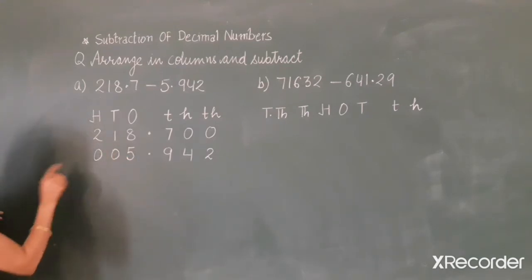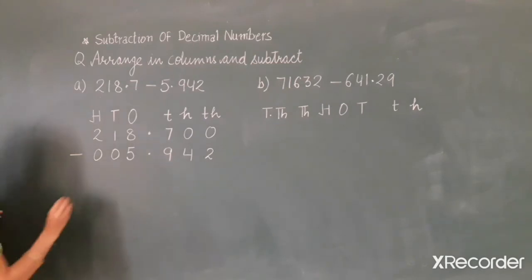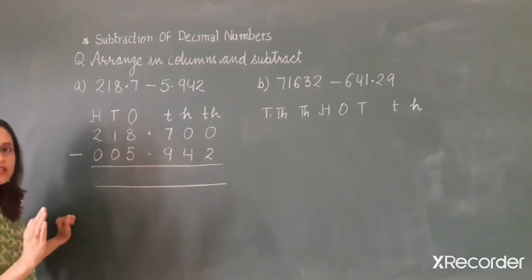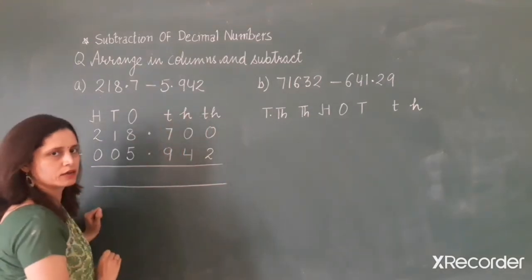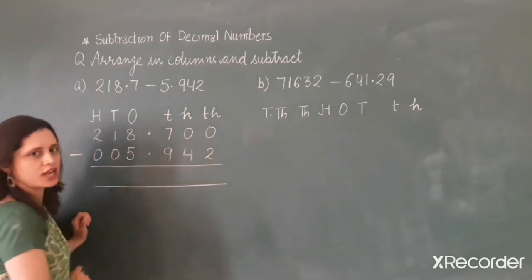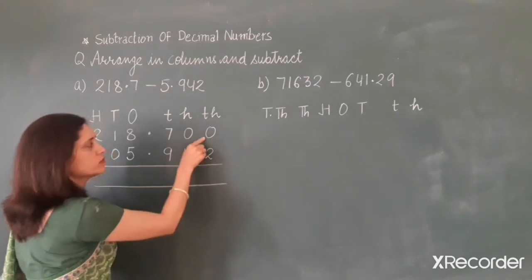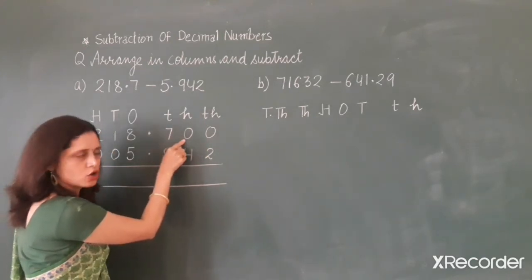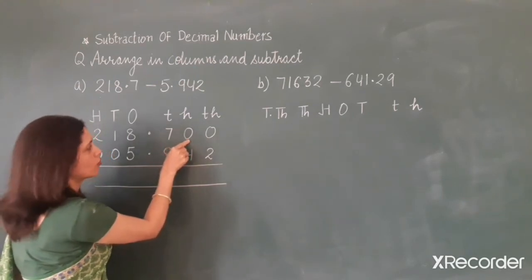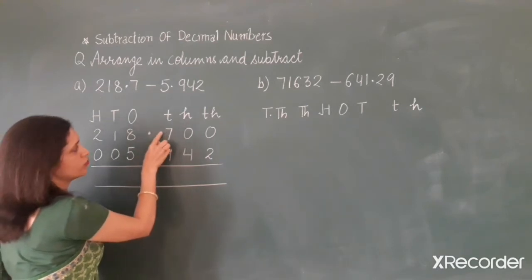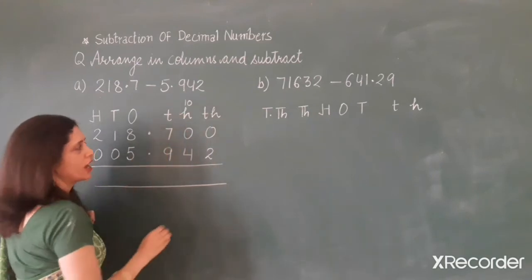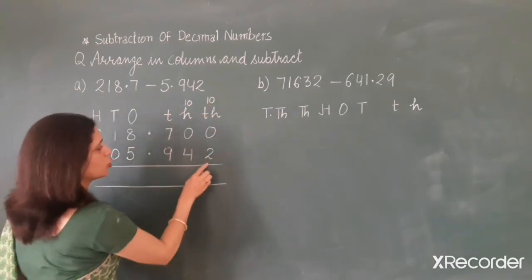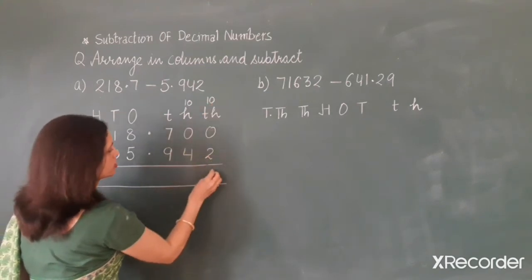Now we will subtract these two decimal numbers. Put the sign of subtraction. When subtracting, always start with the decimal part and go from right to left. First, subtract 2 from 0. Since 0 cannot give, it takes a borrow, but that digit is also 0, so that 0 takes borrow from 7. When 7 gives borrow it becomes 10, and that 10 gives borrow to the next place, which also becomes 10. Now 10 minus 2 is 8.